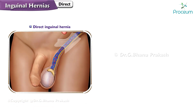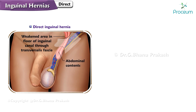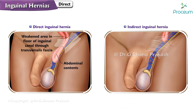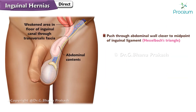Direct Inguinal Hernia: Direct inguinal hernias are a type of abdominal wall hernia that occurs when abdominal contents protrude directly through a weakened area in the floor of the inguinal canal, specifically through the transversalis fascia. Unlike indirect inguinal hernias, which enter the inguinal canal at the internal ring, direct hernias push through the abdominal wall closer to the midpoint of the inguinal ligament, an area known as Hesselbach's triangle.